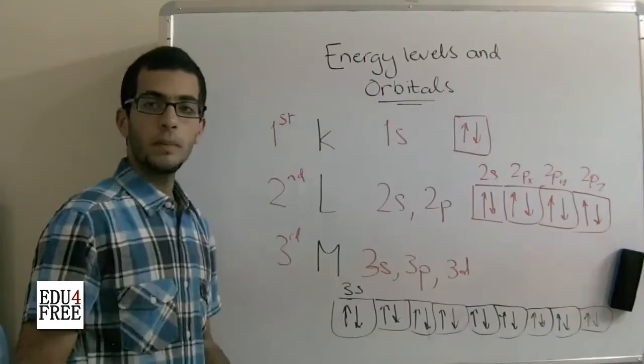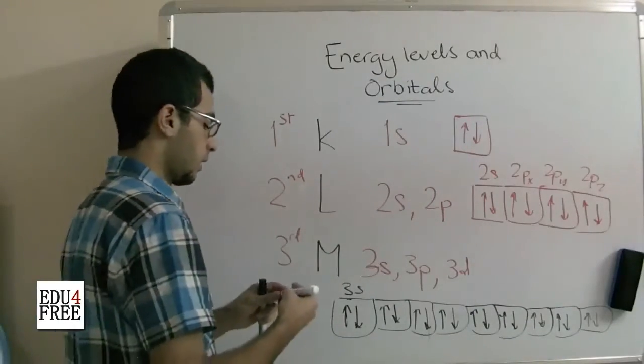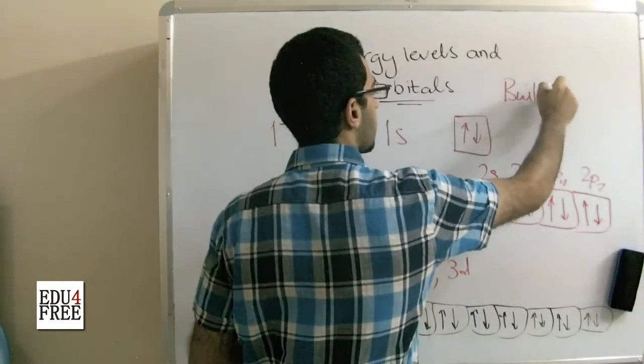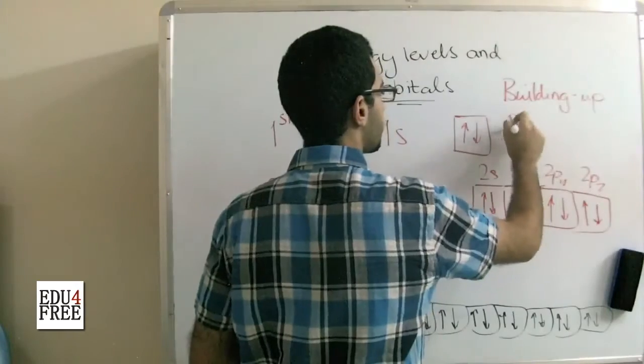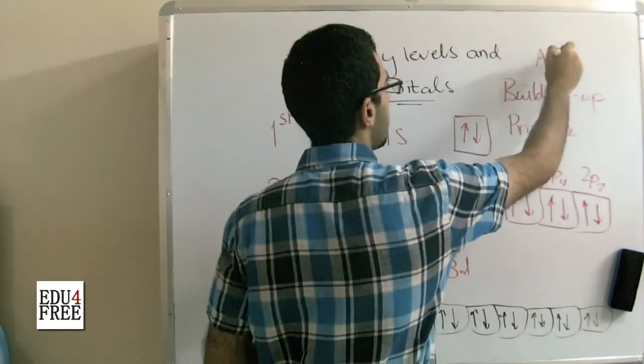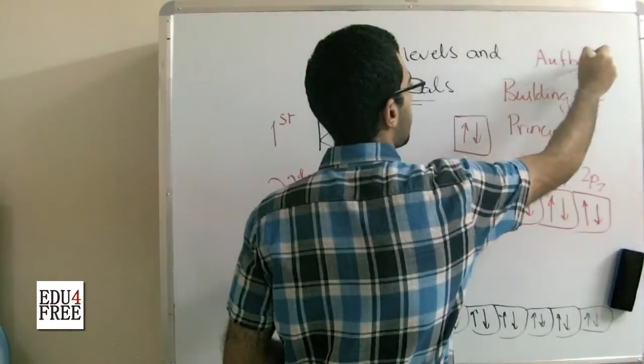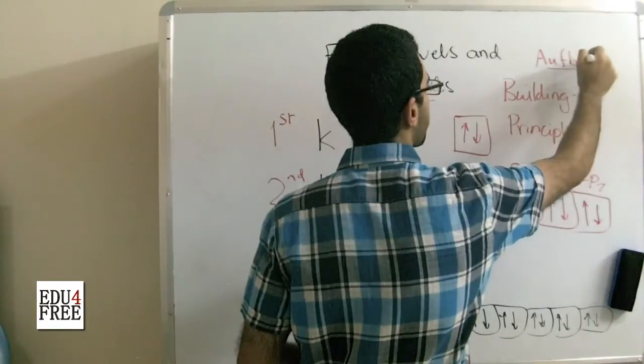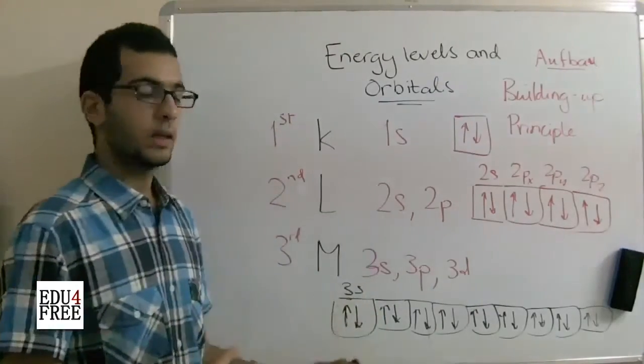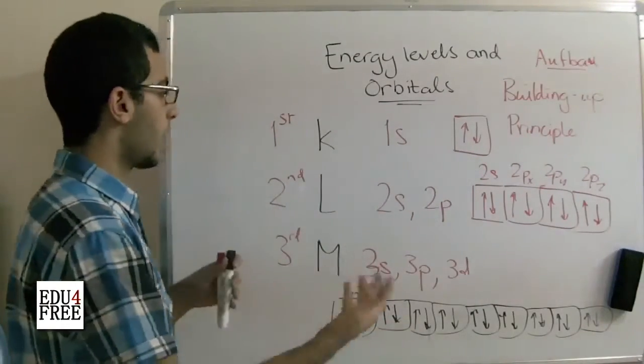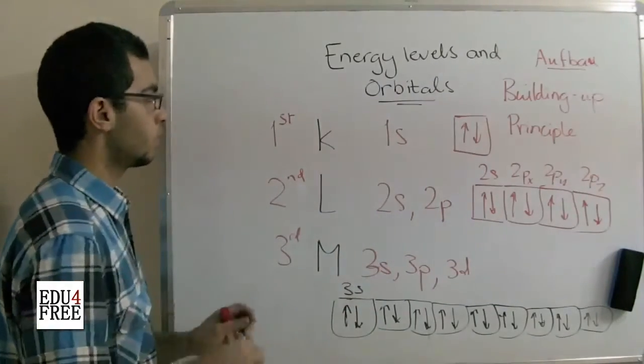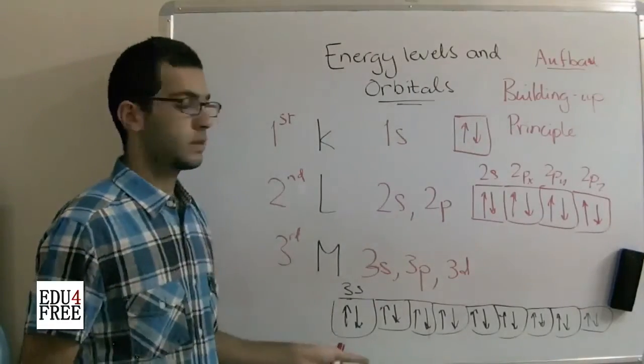So this is it for today. And the next time we will talk about something called the building up principle, which was established by scientists called Aufbau for giving us the knowledge of how the electrons built up the atom, how they are arranged in the orbitals, in what order are they arranged in the orbitals. And until the next time, I thank you for watching.